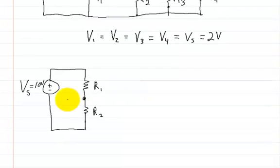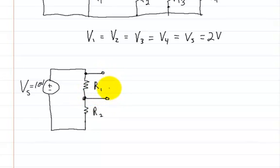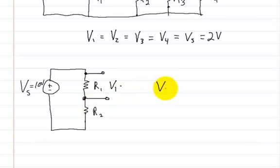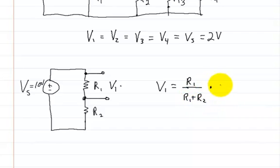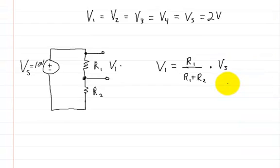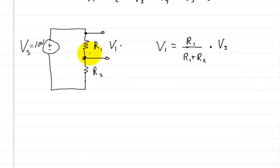Now this circuit down here is slightly different, because these two resistors are in series. So if I put one lead here and another lead right here and put a voltmeter on it, this would be V1. This voltage would be a ratio of the total resistance. To solve for V1, you'd say V1 is equal to R1 divided by R1 plus R2, multiplied by the voltage of the supply.